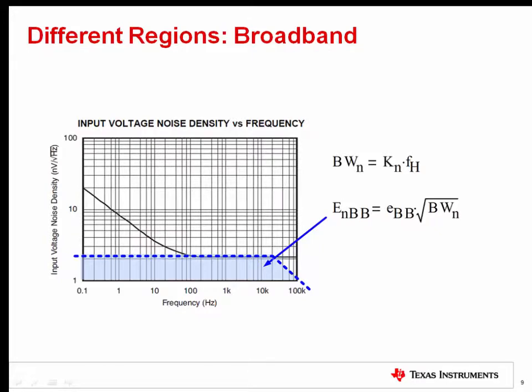Now let's consider the broadband region. Notice that a low pass filter is added at the end of the broadband region. All real world circuits will have some kind of bandwidth limitation. Without bandwidth limitation, the total integrated noise would be infinite.